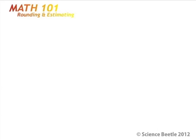Today we're going to be looking at rounding and estimating. When we talk about rounding and estimating, essentially what we're talking about is we're going to take one number that's usually a decimal like 28.1, and we're going to substitute this number for another number that's going to be easier for us to either subtract, add, divide, or multiply. So it just makes it easier on us as the user.